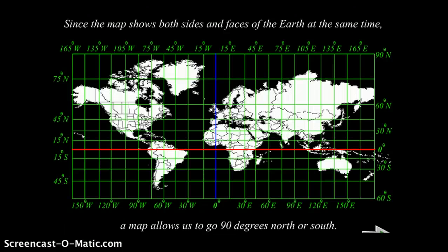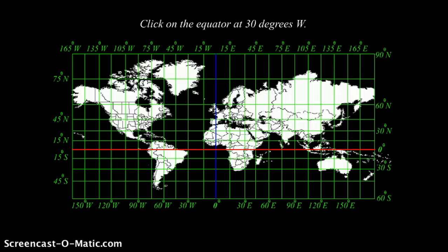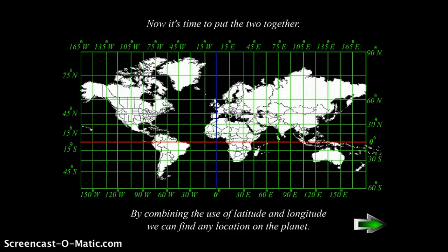Since the map shows both sides and faces of the earth at the same time, a map allows us to go 90 degrees north or south. Let's see what you can do. Once again, you're going to go back to this recording and answer these questions. Click on the equator at 30 degrees west. Now is your opportunity to go in and practice. Follow the link in Edmodo to practice this for yourselves. When you're finished, come back to this video.